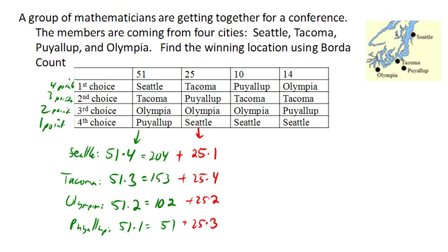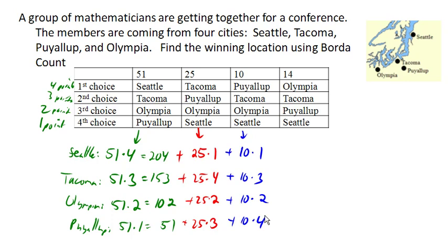Moving on to the next group: we have 10 voters, each giving 1 point to Seattle, 3 points to Tacoma, 2 points to Olympia, and 4 points to Puyallup. And finally, we have 14 voters who are giving 1 point to Seattle, 3 points to Tacoma, 4 points to Olympia, and 2 points to Puyallup.